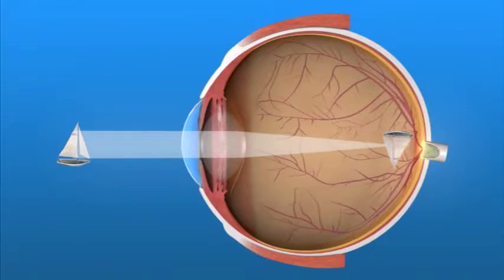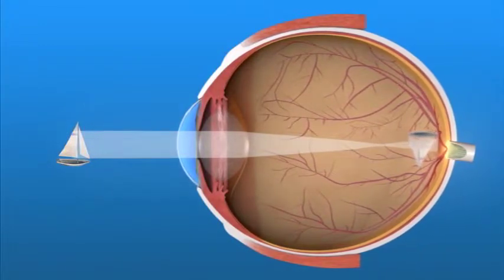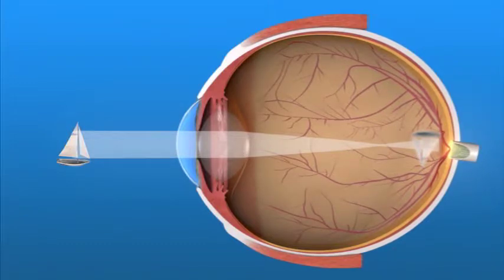Myopia, or nearsightedness. This happens when the distance between the cornea and the retina is very large, so the rays of light focus in front of the retina, instead of on it. With myopia, close objects appear clear, but distant objects appear blurred.